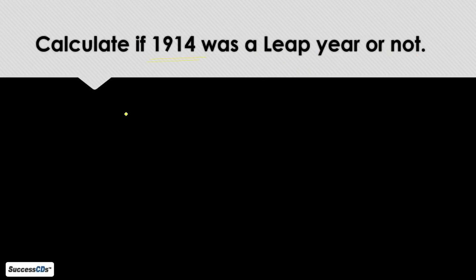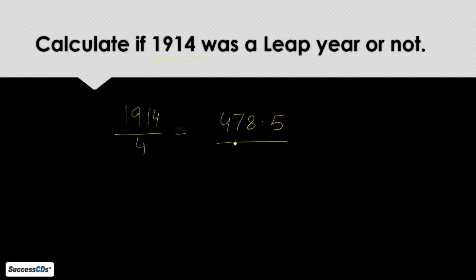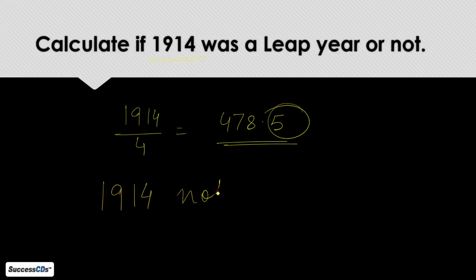Let us see another example. We have to calculate if 1914 was a leap year or not. Step 1: 1914 divided by 4 gives 478.5 — it is not exactly divisible, there is a remainder. Hence we say that 1914 was not a leap year. Step 1 itself is not fulfilled, so we do not proceed to further steps.